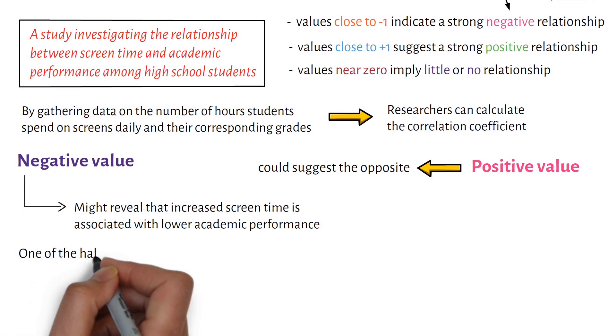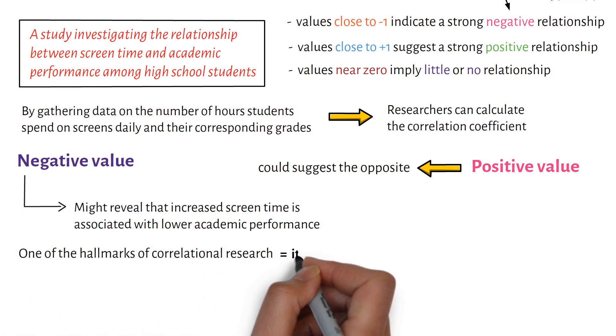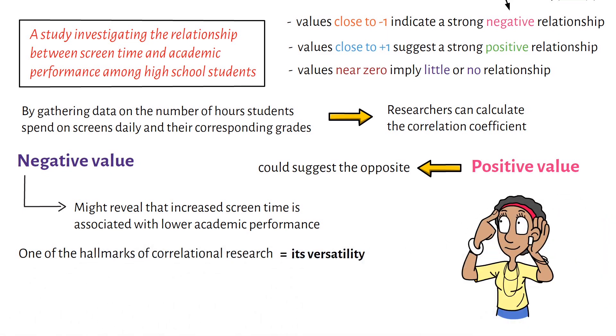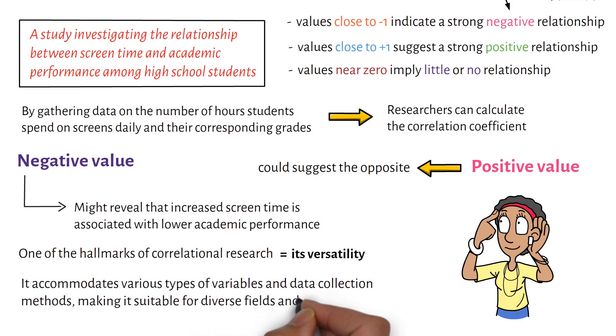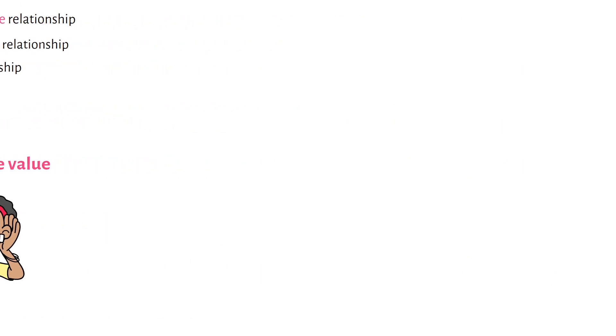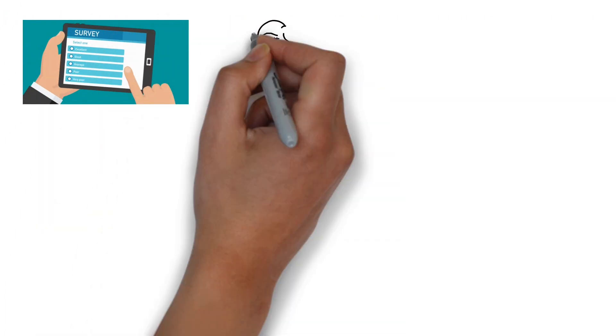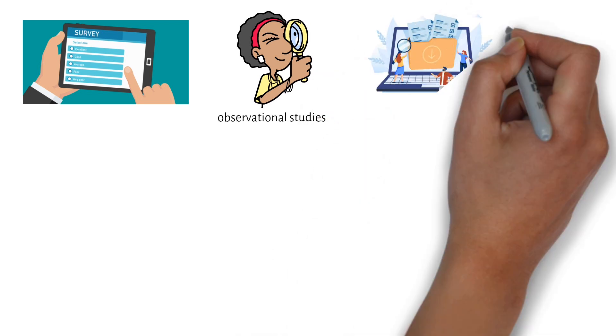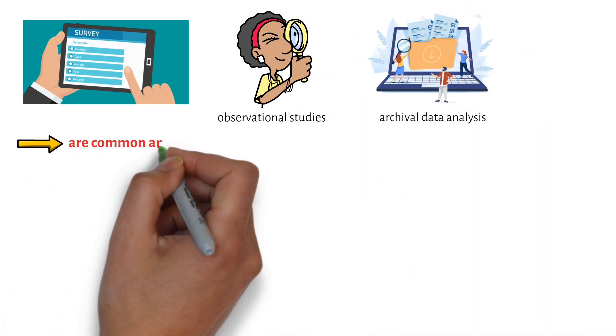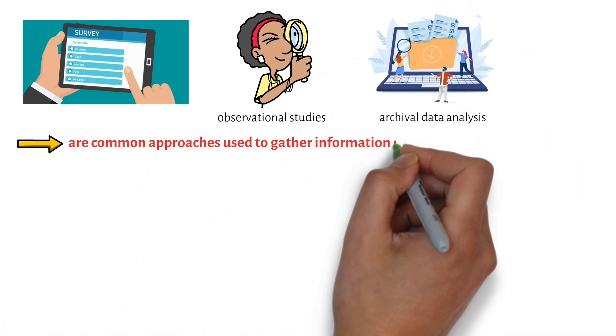One of the hallmarks of correlational research is its versatility. It accommodates various types of variables and data collection methods, making it suitable for diverse fields and contexts. Surveys, observational studies, and archival data analysis are common approaches used to gather information in correlational studies.